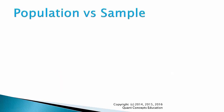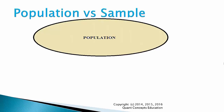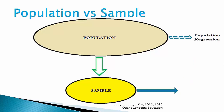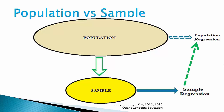Recall from hypothesis testing that we had a population that is infinitely large and we were interested in the population mean. However, the population mean was not observable, so we took a random sample and calculated the sample mean. Using the sample mean, we could make estimates or inferences about the population mean. Now, in terms of regressions, we cannot observe the population regression, but we can observe the sample regression and make inferences about the population regression line. How do we make inferences? Good old hypothesis testing.